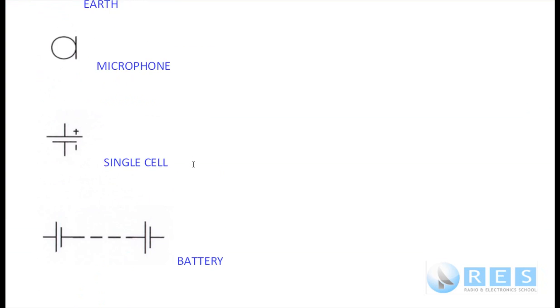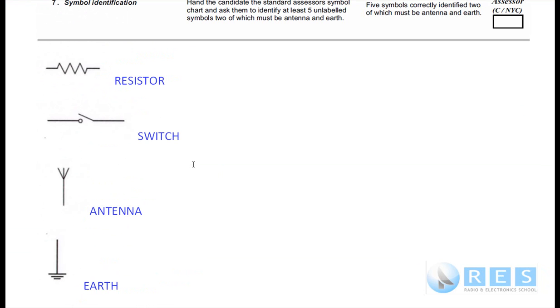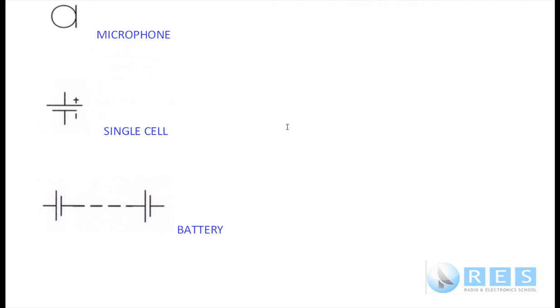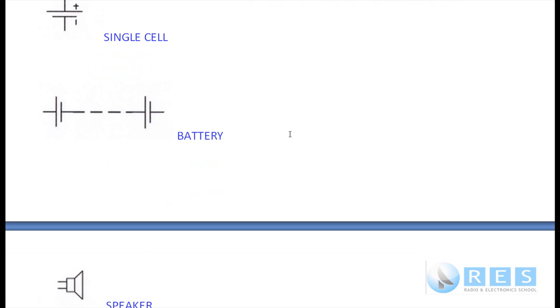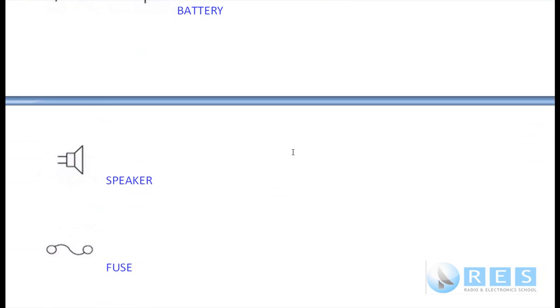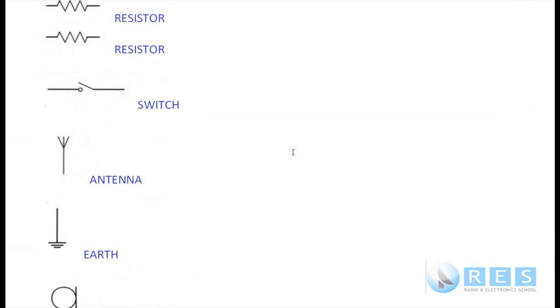So let's just go through them quickly again. You only have to remember five, but you have to remember antenna and earth and two others: resistor, switch, antenna, earth, microphone, single cell, battery, speaker, fuse, and lamp.